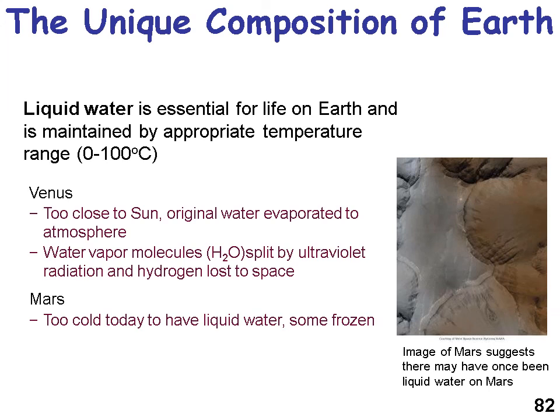Liquid water is essential for any life, with a range of 0 to 100 degrees centigrade between freezing and boiling. Venus is too close to the sun, so original water evaporated; water vapor molecules — H2O — are split by ultraviolet radiation and hydrogen is lost into space. Mars is too cold today to have liquid water — there is water on Mars, but it's frozen.